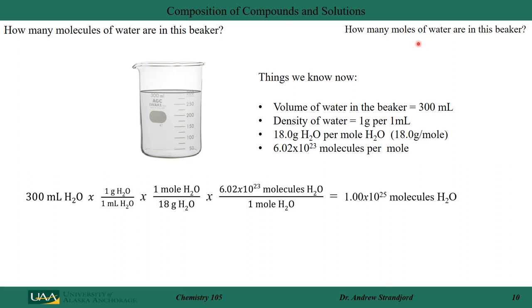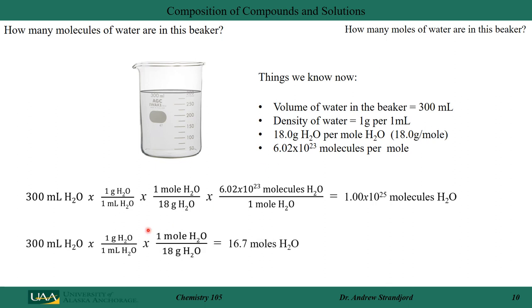Let's also calculate how many moles of water are in this beaker, because that's a very useful quantity in chemistry. We don't often think about the actual number of molecules since it's such a large number — we typically convert to moles instead. Starting with 300 milliliters, I convert to grams using the density relationship, then convert to moles using the grams-per-mole relationship for water. The result is 16.7 moles of water. This number tells us how many molecules are in that beaker. From now on, we'll think in terms of moles. In the next section, let's see how else we can use the concept of moles.